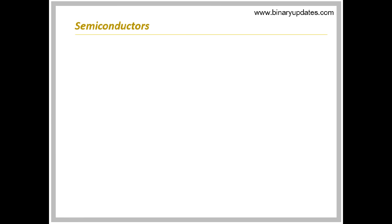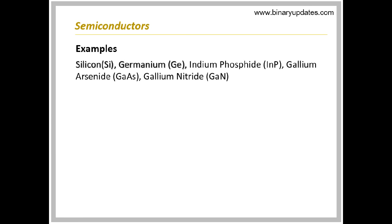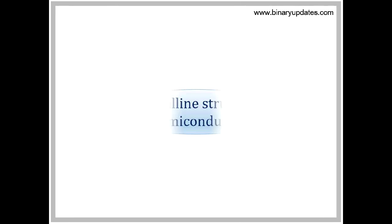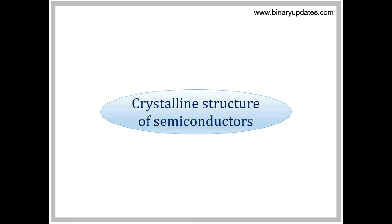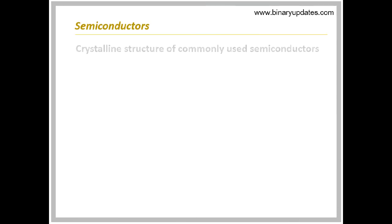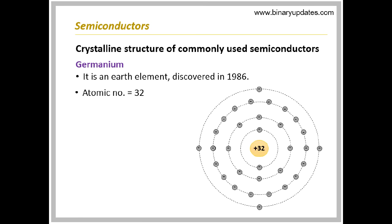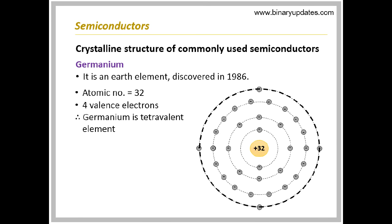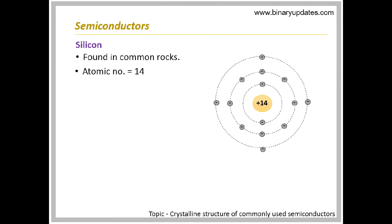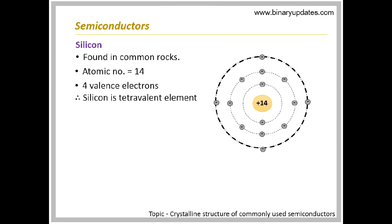The examples of semiconductors are silicon and germanium. Let us see the crystalline structure of commonly used semiconductors. Crystal means an orderly arrangement of atoms in a substance. Germanium is an earth element with atomic number 32. Since it has four electrons in its outermost orbit, it is called a tetravalent element. Silicon is another commonly used semiconductor with atomic number 14. Since it has four electrons in its outermost orbit, it is also called a tetravalent element.